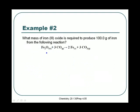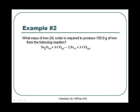Let's try another example. What mass of iron oxide is required to produce 100 grams of iron according to the following reaction? We start by writing down what we're being asked for: the mass of iron(III) oxide — that's what we want to know, so we put a question mark there. We've been given the mass of iron. Because we're working with mass, we need our molar masses: the molar mass of iron oxide (Fe₂O₃) is 159.7 grams per mole, and the molar mass of iron is 55.85 grams per mole.